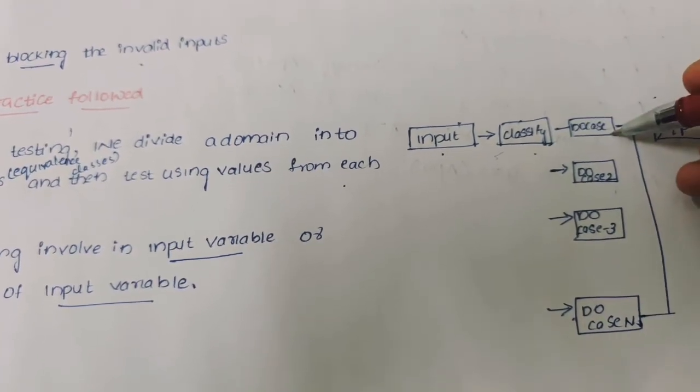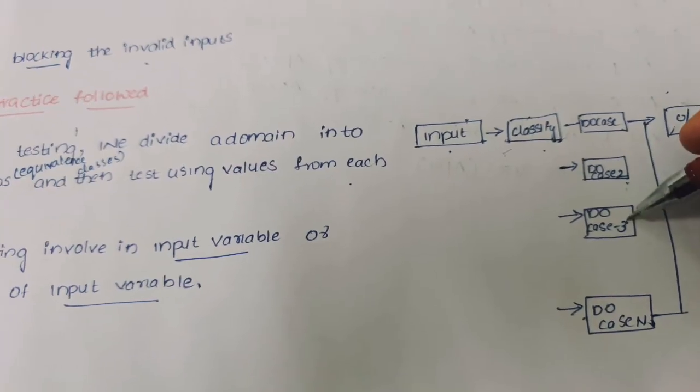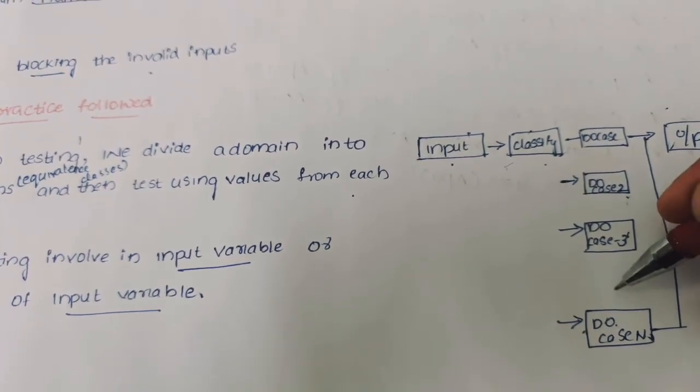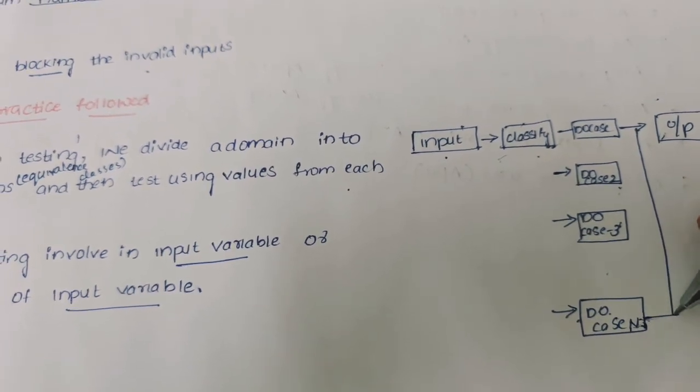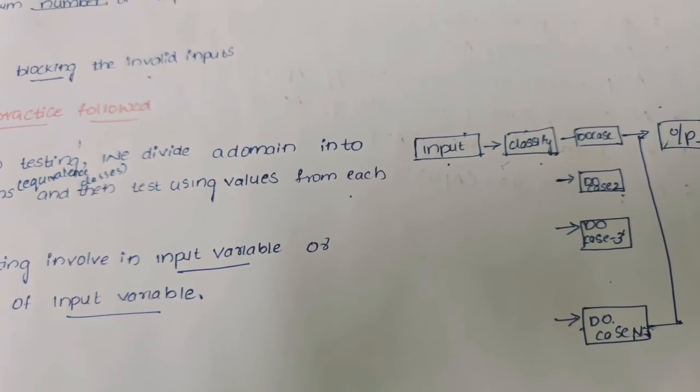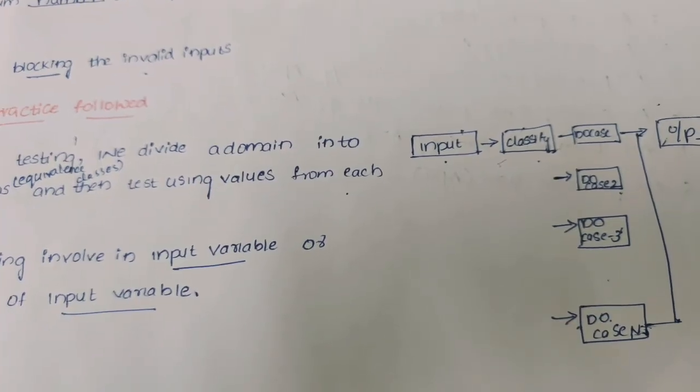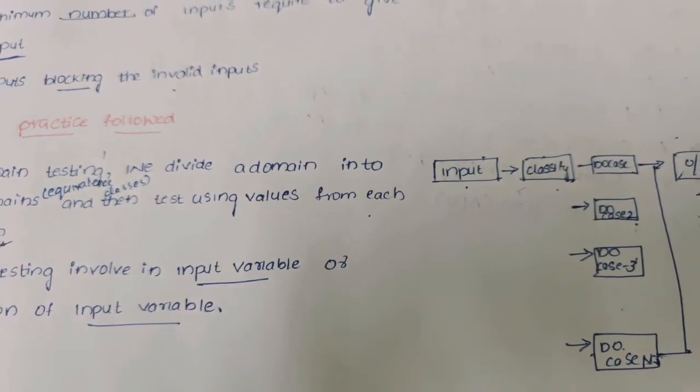First case, second case, third case, fourth case - n number of cases can be tested. Then whatever output we get, that is the output of the input. This is the general practice followed by domain testing.